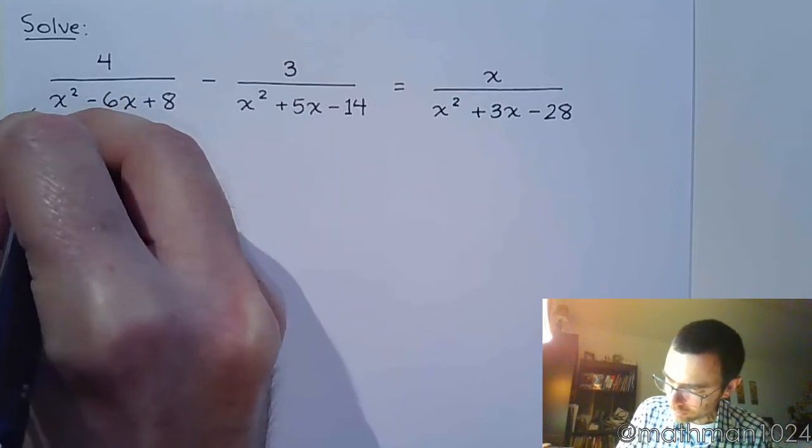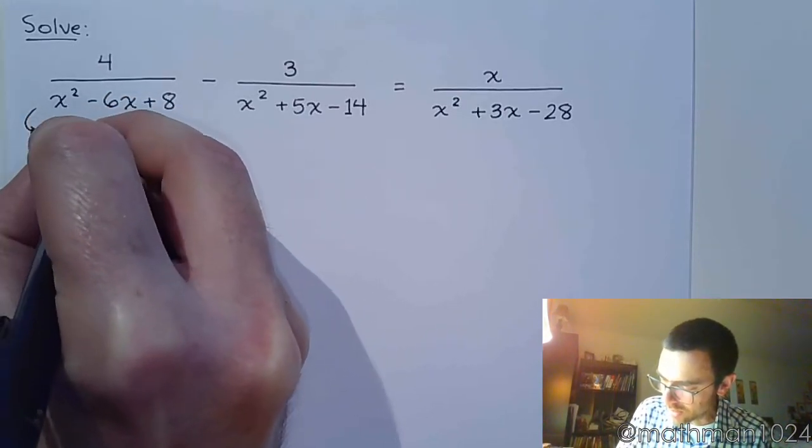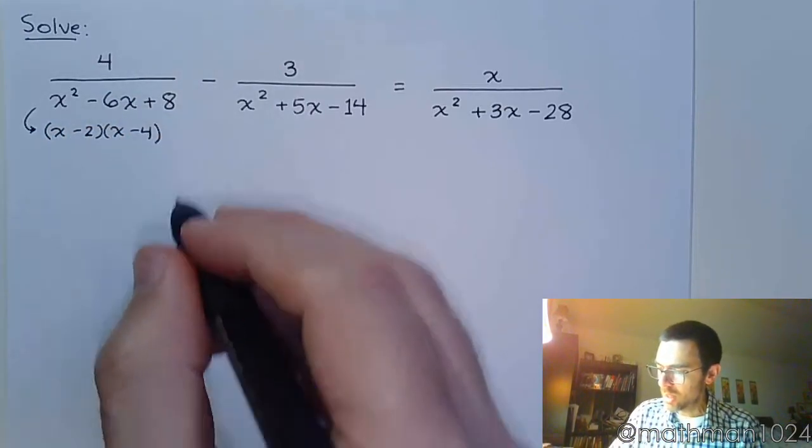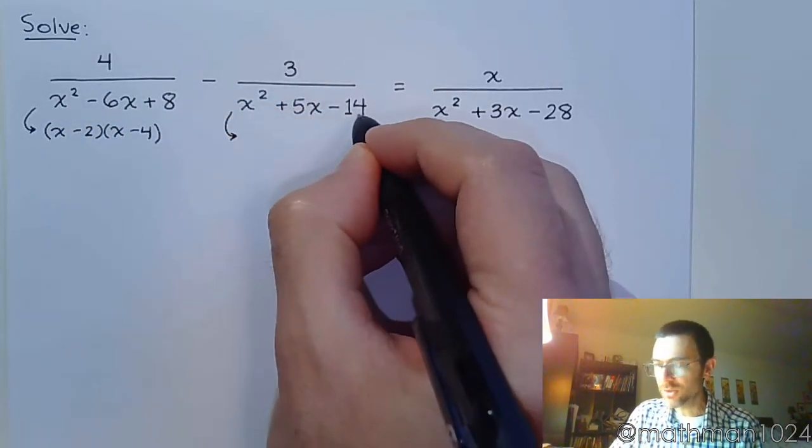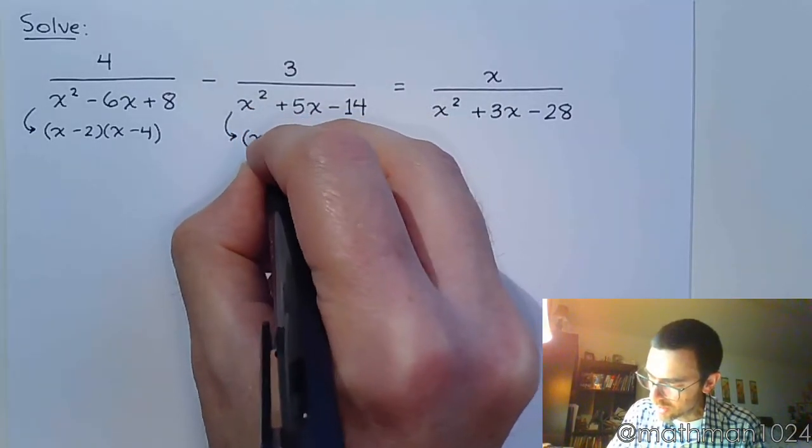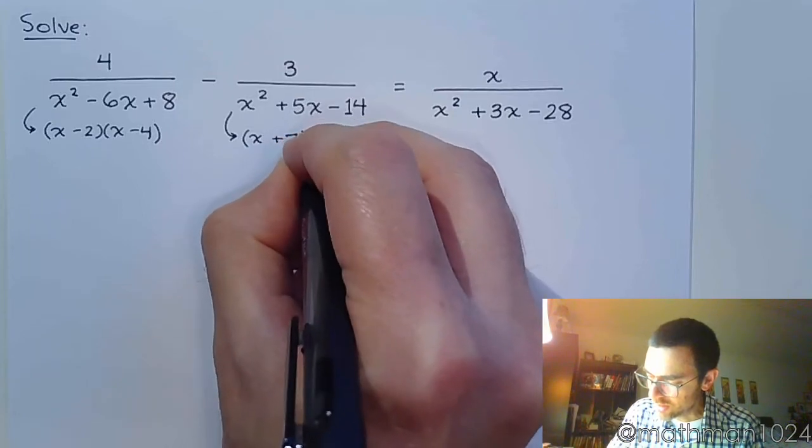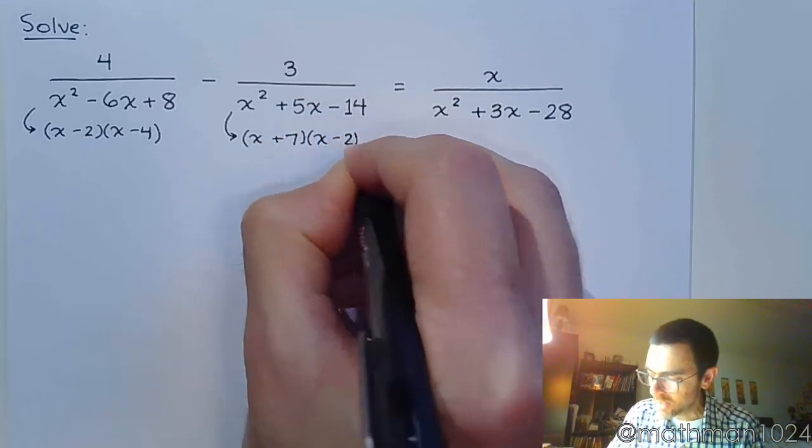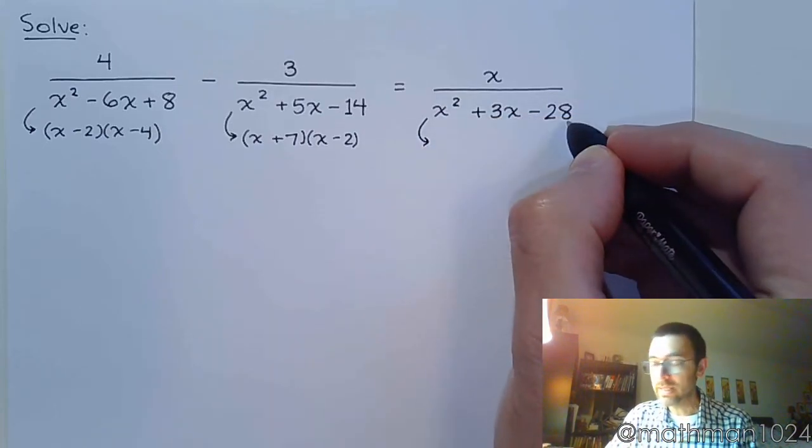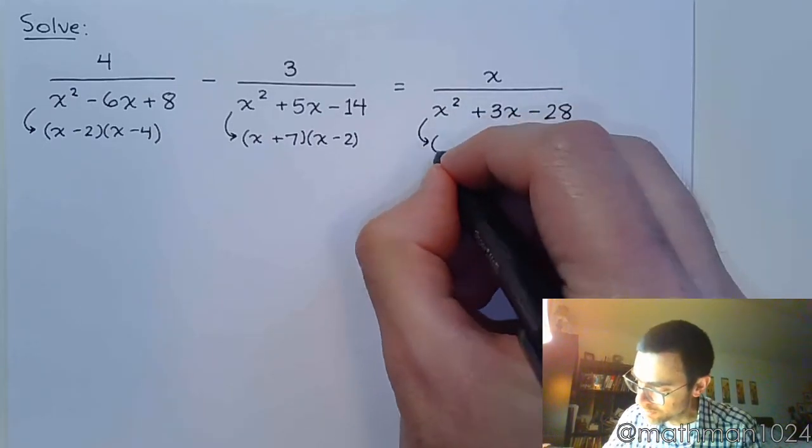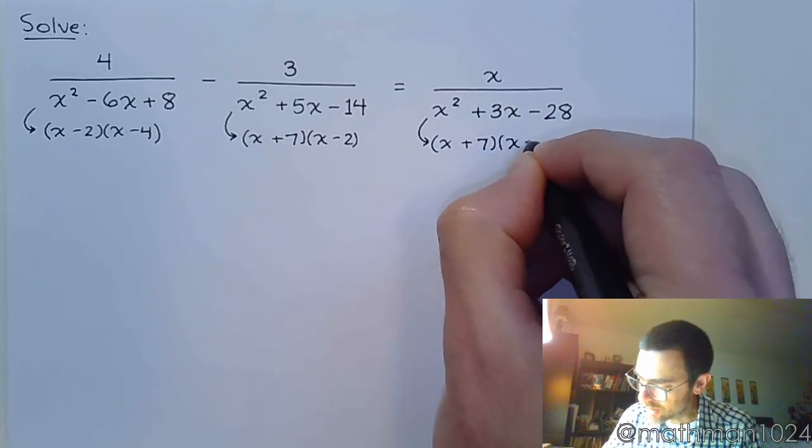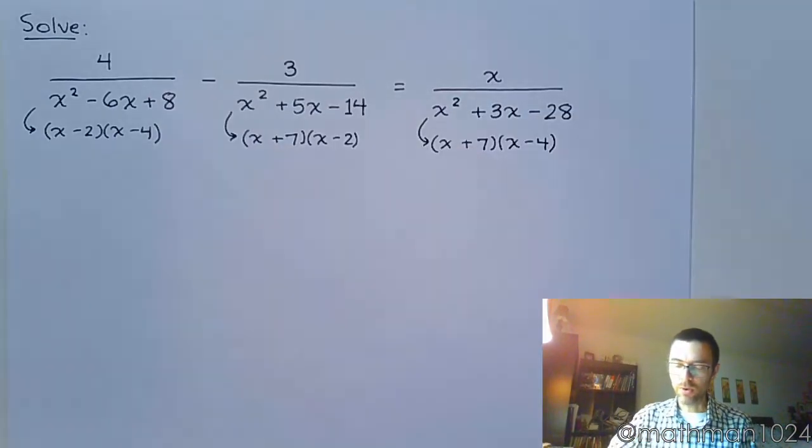So this guy right here is going to factor as (x - 2)(x - 4). This one, we need factors of 14 that subtract to 5, so that's going to be (x + 7)(x - 2). And over here, factors of 28 that subtract to 3. That is (x + 7)(x - 4).